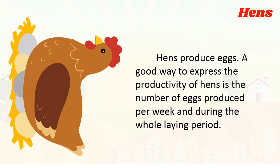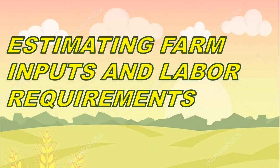How about hens? Hens produce eggs. A good way to express the productivity of hens is the number of eggs produced per week and during the whole laying period. Next, estimating farm inputs and labor requirements — farm inputs refers to the things used in farms like feeds, seeds, the foods of the animals, and labor requirements.